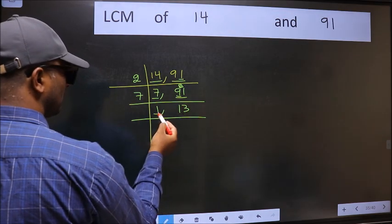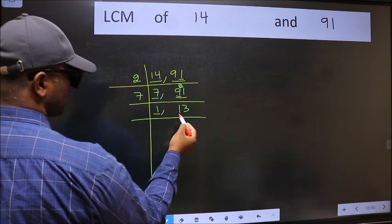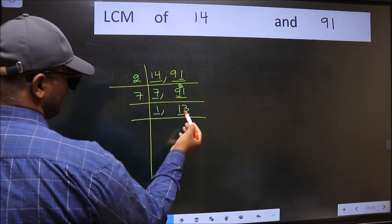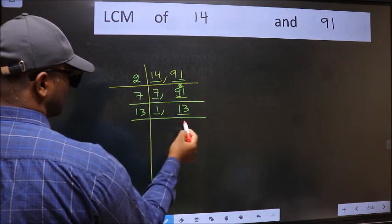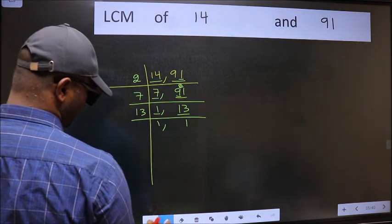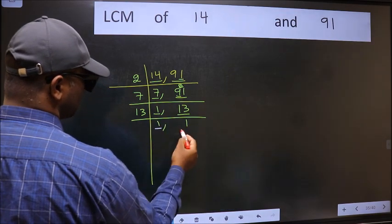Now we got 1 here. Focus on the next number, 13. 13 is a prime number, so 13 divided by 1 is 13. We got 1 in both places.